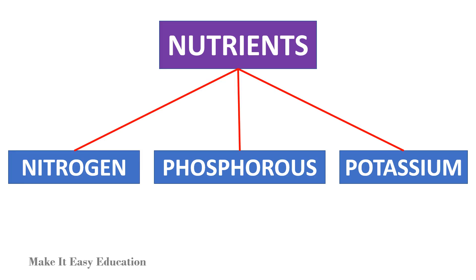The three important nutrients are nitrogen, phosphorus, and potassium. These three nutrients are called principal nutrients.